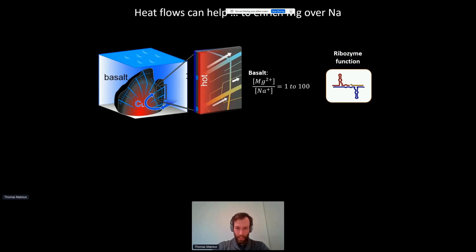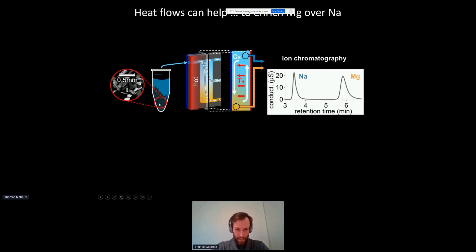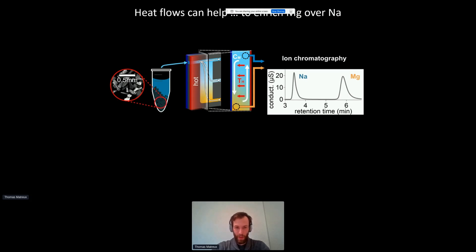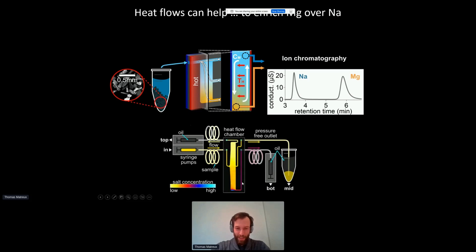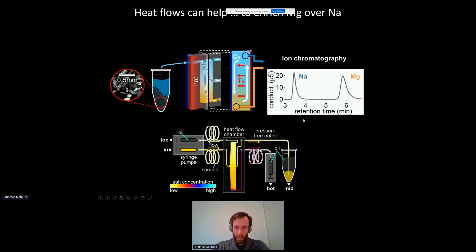How do we do that experimentally? We start off with simple basaltic material, put it into an Eppendorf tube, add water, take the supernatant, and expose it to a heat flow chamber. We separate the output into three different fractions, which we then analyze by ion chromatography to see where each ion is. In our experiments we use syringe pumps which continuously provide fluids that are exposed to thermal accumulation and selectively extracted by syringe pumps at the top and bottom.